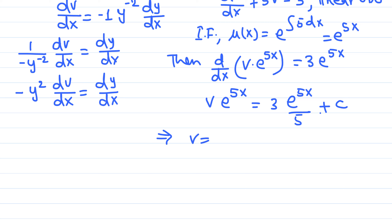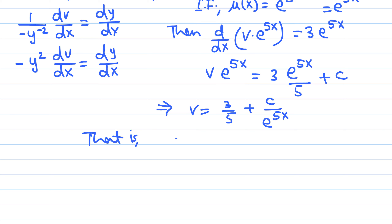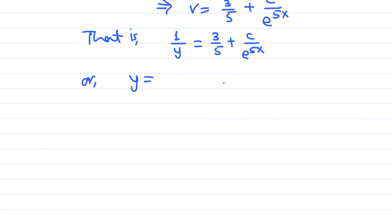Dividing by e^(5x) gives v equals 3/5 plus C times e^(negative 5x). Since v was y⁻¹, we substitute back: 1/y equals 3/5 plus C·e^(−5x). You may leave the answer in this form, or solve for y. If solving for y, do not make the mistake of flipping the fractions individually — y equals 1 over (3/5 plus C·e^(−5x)). The two terms in the denominator can be combined, but it's fine to leave it as is.